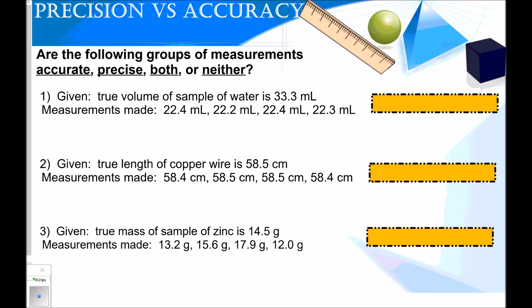Here are some more examples of precision versus accuracy, and it'll more closely relate to what we're going to see in chemistry this year. Let's say the true volume of the sample of water is 33.3 milliliters. The measurements made are 22.4, 22.2, 22.4, and 22.3. Are these measurements that are made accurate, precise, both, or neither? If you analyze these, I would say they're close to each other, but not very close to the true value. So they are precise, but they are not accurate.